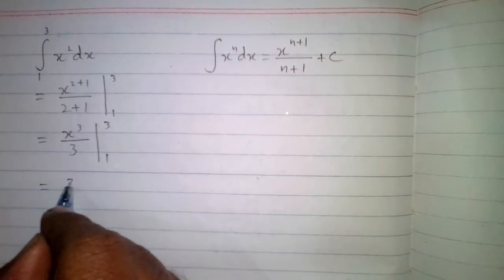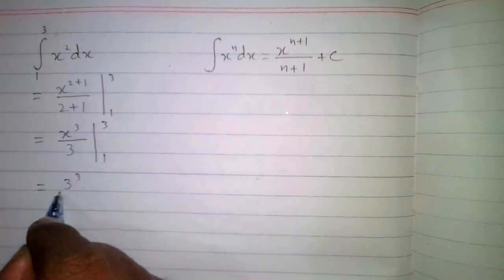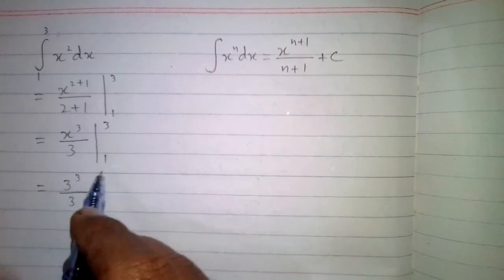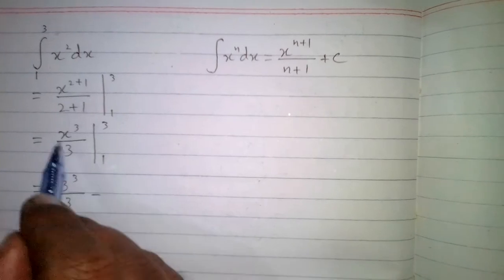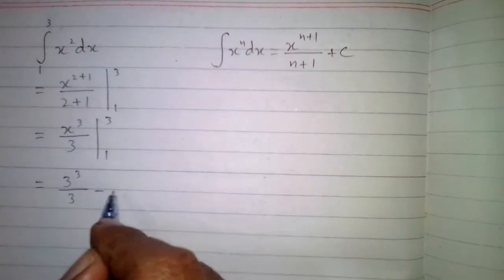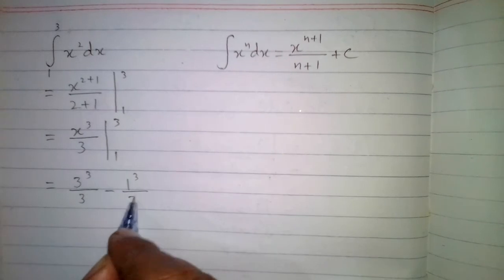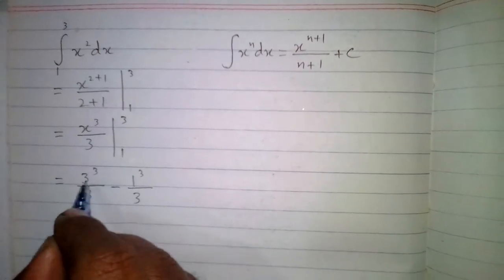So we have 3 cube upon 3, and then we will put a minus sign, and then we will put 1 in place of this x, so we have 1 cube upon 3.